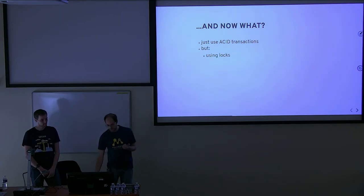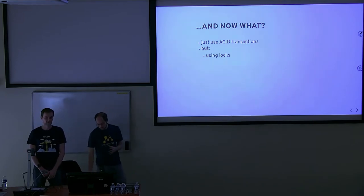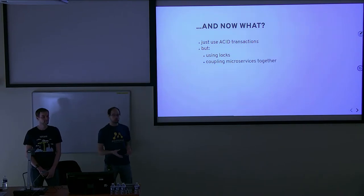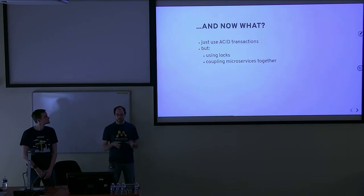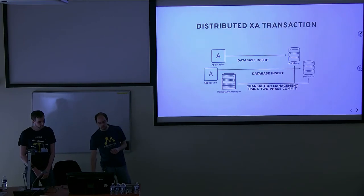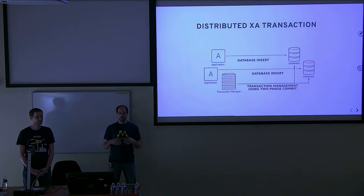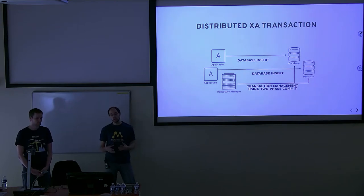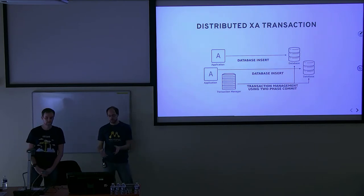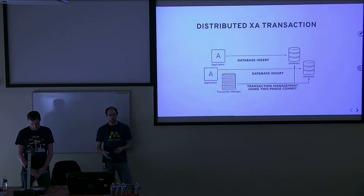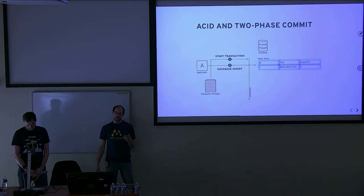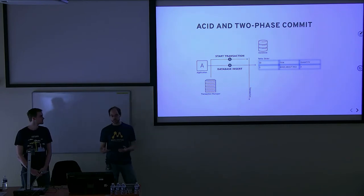That could be trouble for microservices as a distributed system. Normal transactions bring locks, which cause microservices to be coupled together. Normally a transaction manager works with XA transactions, which is a specification to run two-phase commit over different participants. For example, if we have two applications inserting something to databases, it's up to the transaction manager to manage the completion. Looking at one application and one database, we can see the transaction manager starting the transaction at the database.